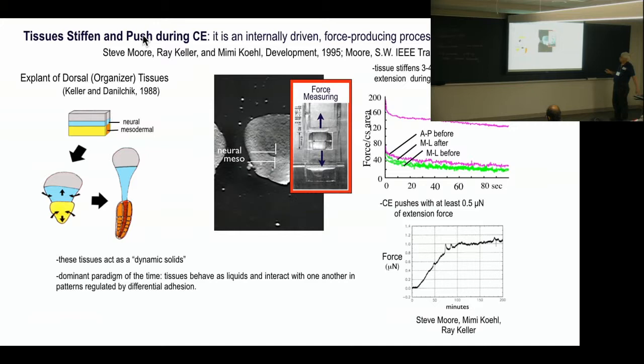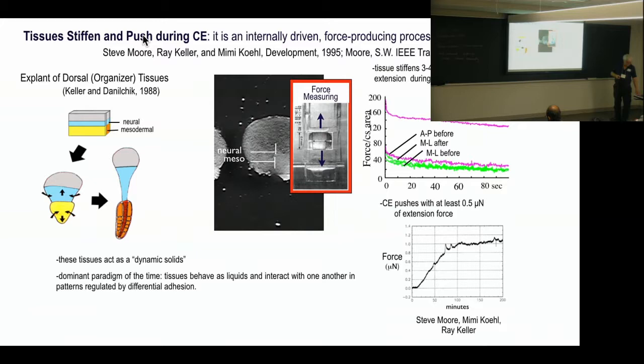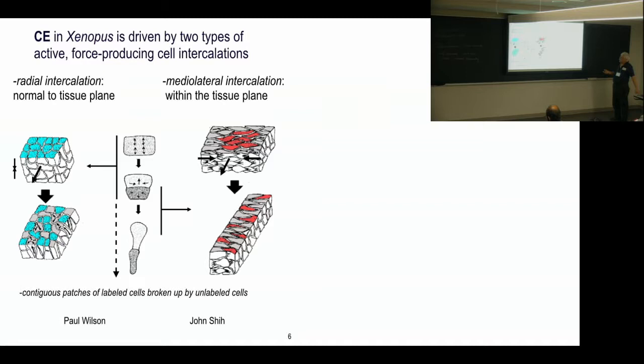The Steinberg differential adhesion hypothesis, which was a version of the old Holtfreter differential affinity hypothesis. So, this set the cat among the pigeons in some people's minds and some people started calling their dynamic solids. This thing, we did an original stiffness measurement with what we call the E 180, because after three minutes, this thing started pushing back. And so, this trace will start going back up. It gets stronger through the progress of convergence and extension and cell intercalation.